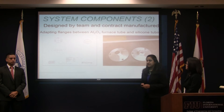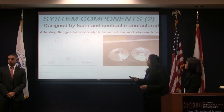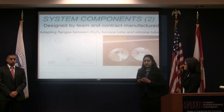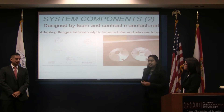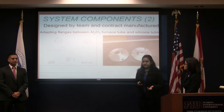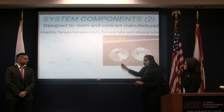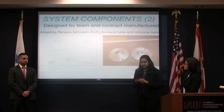The next section is parts we designed and then got custom manufactured. The first is adopting flanges for the furnace tube, which would connect the furnace tube to the tubing we have. These are made out of stainless steel, high temperature, and we made the outer diameter where we connect the tubing to be slightly larger than the inner diameter of the tubing so that there's a tight fit.